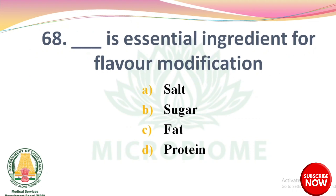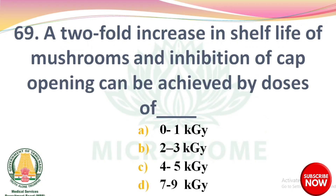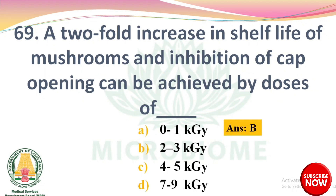Next question: dash is an essential ingredient for flavor modification. Options: salt, sugar, fat, protein. The right answer is Option A: salt. Next question: a two-fold increase in shelf life of mushrooms and inhibition of cap opening can be achieved by doses of options: 0–1 kGy, 2–3 kGy, 4–5 kGy, 7–9 kGy. The right answer is Option B: 2–3 kGy.